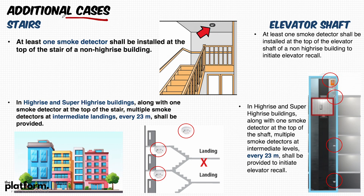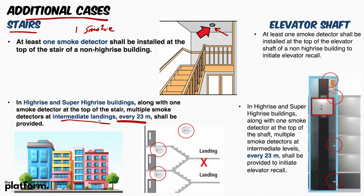Additional cases where smoke detectors are required: first, staircases. At least one smoke detector shall be provided at the top of the stair in a non-high-rise building, as per the UAE Civil Defense Code 2018. In high-rise and super high-rise buildings, in addition to one detector at the top of the stair, multiple smoke detectors shall be provided every 23 meters at the intermediate landings.